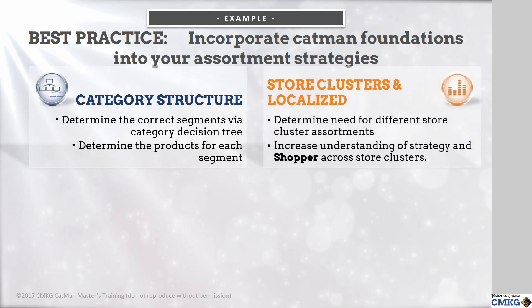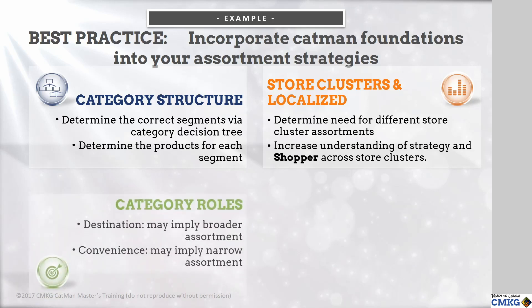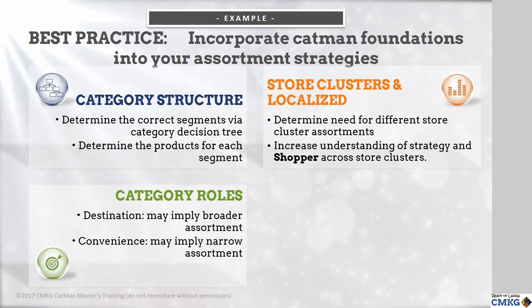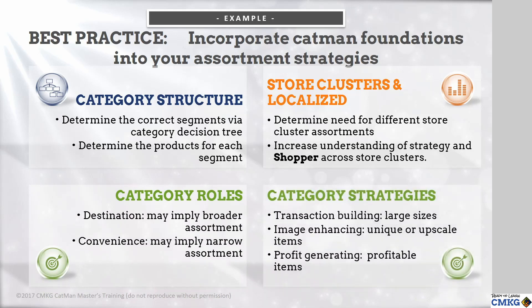Store clusters and localized assortments: understand current requirements for clusters and localized assortments, and determine if it's necessary for your categories. You also need to consider category roles and strategies, which have direct implications on depth of assortment and types of products to be carried in specific categories.